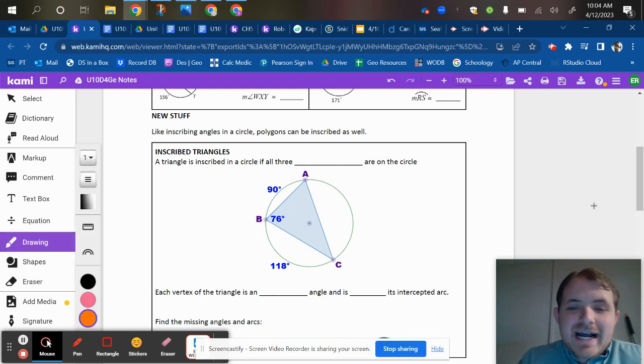Okay, so fun day, we finally have shapes inside of a circle. We call something inscribed if it's sitting perfectly inside the circle. So this inscribed triangle has all three vertices on that circle.